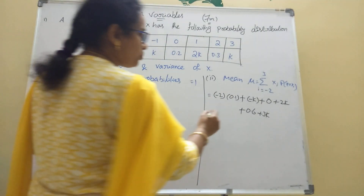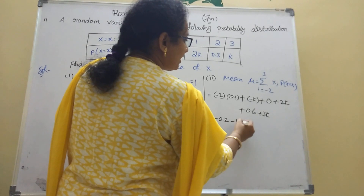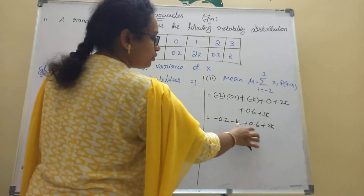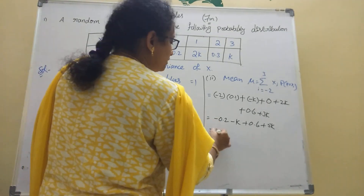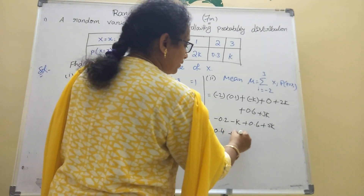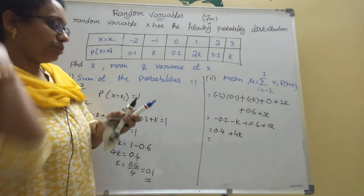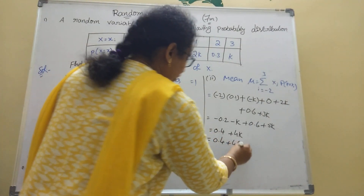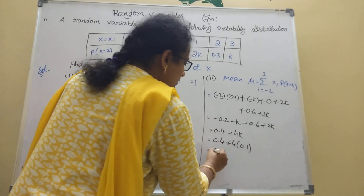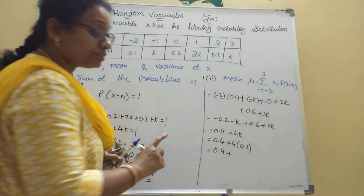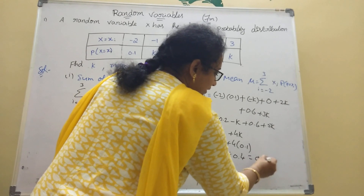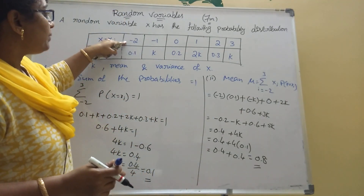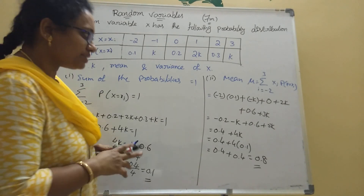Simplifying: minus 2 times 0.1 is minus 0.2, minus 1 times k is minus k, zero is zero, 1 times 2k is 2k, 2 times 0.3 is 0.6, and 3 times k is 3k. Constants: 0.6 minus 0.2 equals 0.4. K terms: 3k plus 2k minus k equals 4k. So mean equals 0.4 plus 4k. With k equal to 0.1: 4 times 0.1 is 0.4, so mean equals 0.4 plus 0.4 equals 0.8.